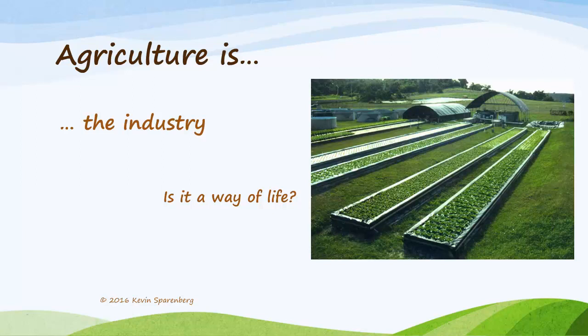Agriculture is the industry — that is how our definition starts. Industry is the production of goods or related services. Many people like to think of farming and ranching as a way of life, but then so is working in a factory or operating a grocery store. So let's focus on the idea that agriculture is an industry, and we can talk about a way of life in another lesson.